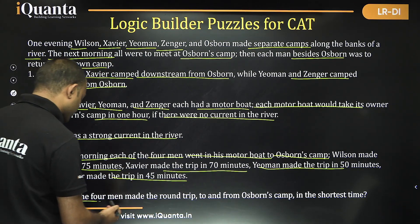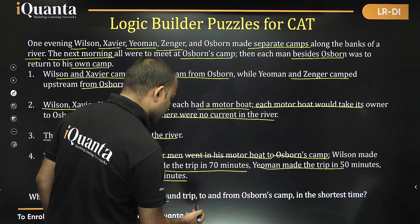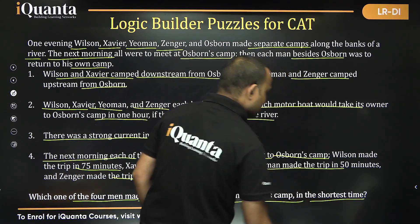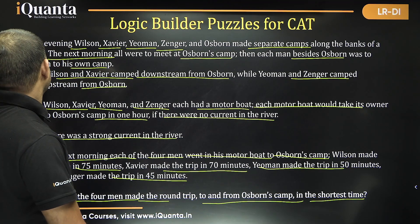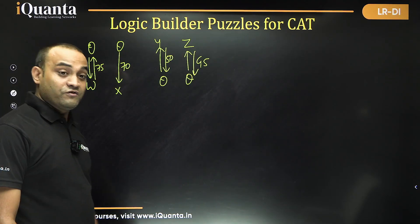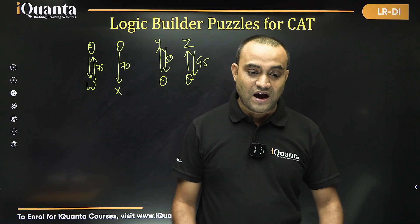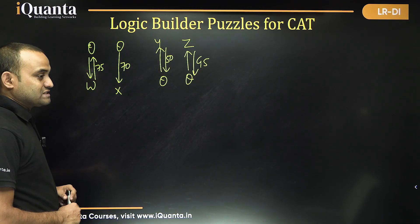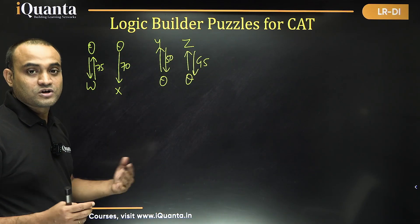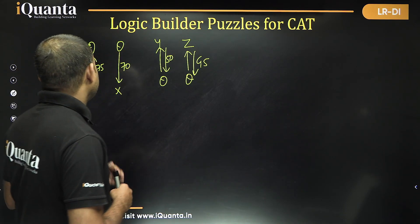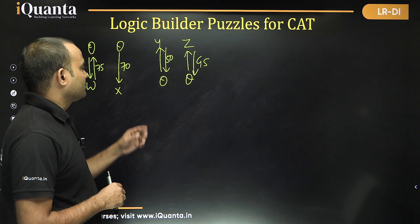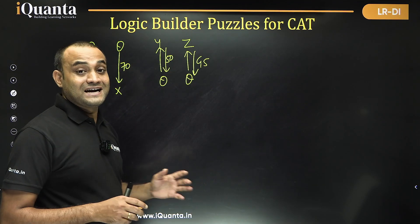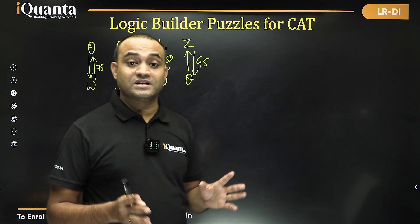The question is: which one of the four made the round trip to and from Osborne's camp in the shortest time? One way to solve this is to take the speed of Wilson as W km/h, Xavier as X km/h, Yeoman as Y km/h, and Zenger as Z km/h.